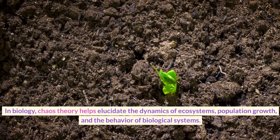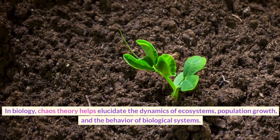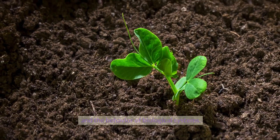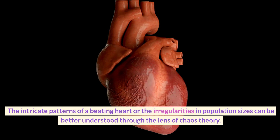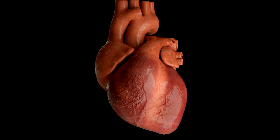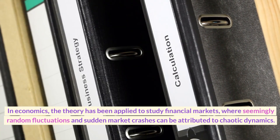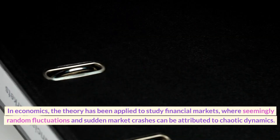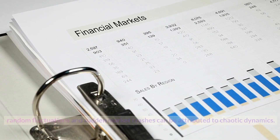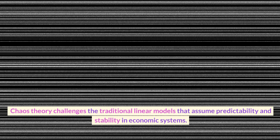In biology, Chaos Theory helps elucidate the dynamics of ecosystems, population growth, and the behavior of biological systems. The intricate patterns of a beating heart or the irregularities in population sizes can be better understood through the lens of Chaos Theory. In economics, the theory has been applied to study financial markets, where seemingly random fluctuations and sudden market crashes can be attributed to chaotic dynamics. Chaos Theory challenges the traditional linear models that assume predictability and stability in economic systems.